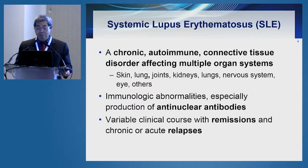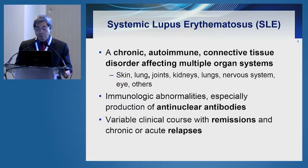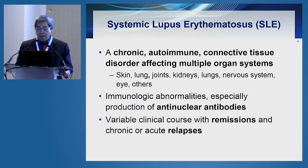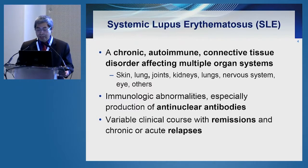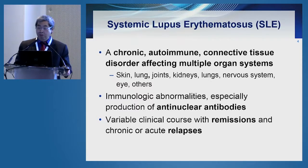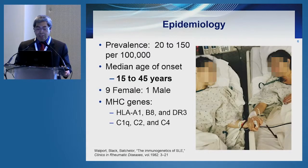SLE is a chronic autoimmune connective tissue disorder that affects multiple organ systems, and it's characterized by multiple immunologic abnormalities, especially the production of anti-nuclear antibodies or autoantibodies. It's also characterized by a variable clinical course with remissions and chronic or acute relapses.